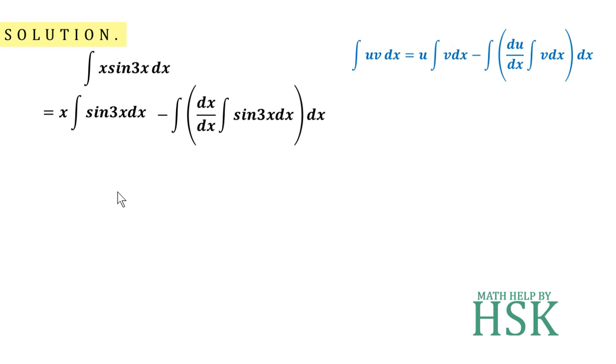The integral of sin(3x) is -1/3 cos(3x). Substituting the values, we get: x times (-1/3 cos(3x)) minus the integral of 1 times (-1/3 cos(3x)) dx.